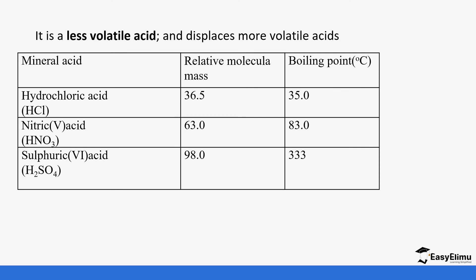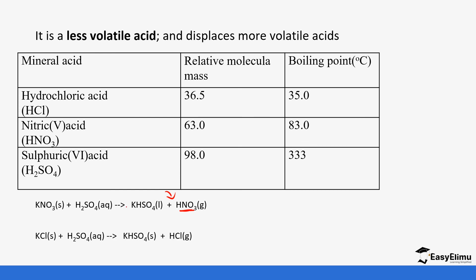Because sulfuric acid is less volatile, it can displace other more volatile acids such as hydrochloric acid and nitric acid. For example, reacting with metal nitrates allows sulfuric acid to displace the nitrate ions and form nitric acid — this is one of the processes for forming nitric acid discussed in the nitrogen compounds topic. It can also react with potassium chloride to form hydrochloric acid, which is the lab preparation of hydrochloric acid. This concludes the reactions of concentrated sulfuric acid, and in the next lesson we will look at the properties of dilute sulfuric acid.